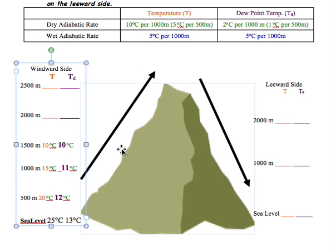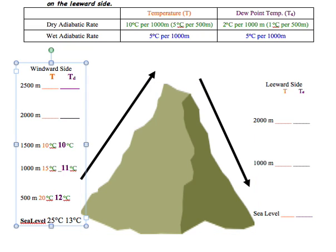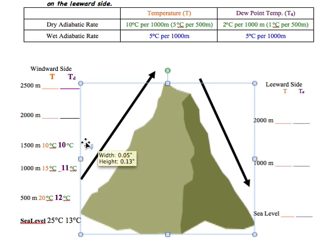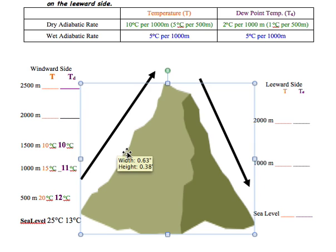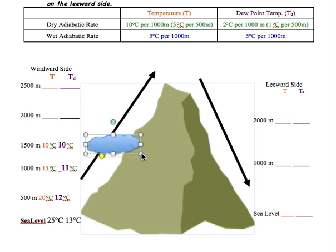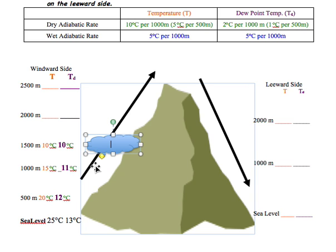Now the numbers match — both temperature and dew point are at 10°C. Because they match, we have 100% relative humidity and we switch to the wet adiabatic rate. At this point you'd want to draw a cloud with a beautifully flat bottom to mark where that cloud forms. That's our visual reminder that we're now switching to the wet adiabatic rate.